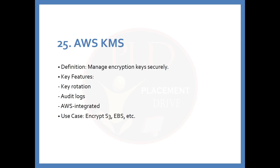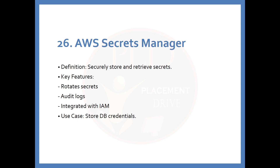The 25th service is AWS KMS. The definition is: manage encryption keys securely. Key features include key rotation, audit logs, and AWS integration. The 26th service is AWS Secrets Manager. The definition is: securely store and retrieve secrets. Key features include secret rotation, audit logs, and IAM integration. The use case is storing database credentials.